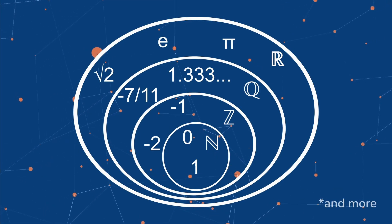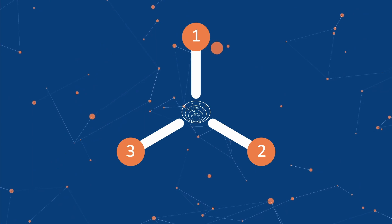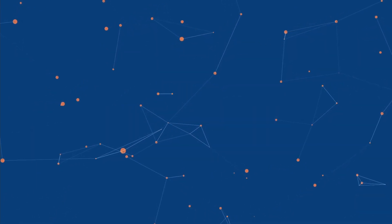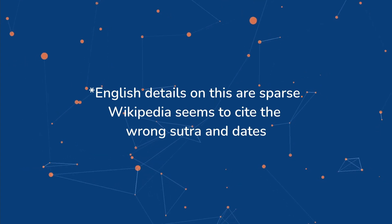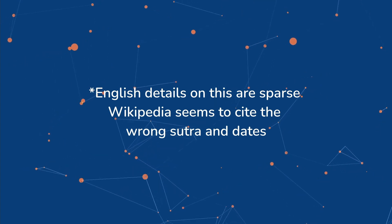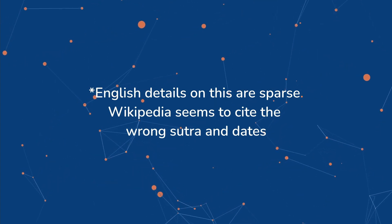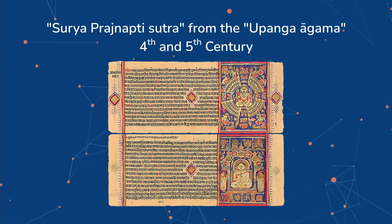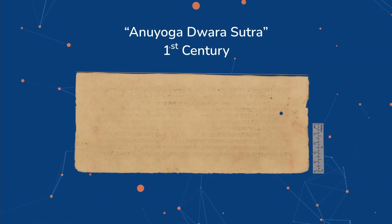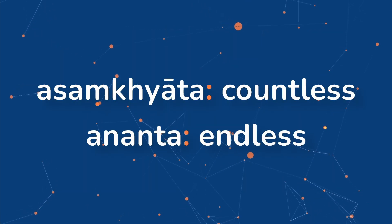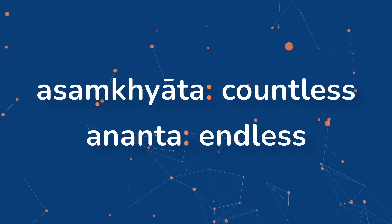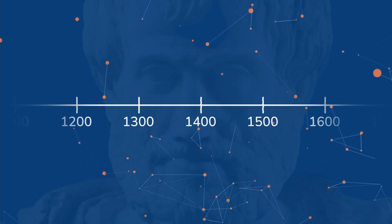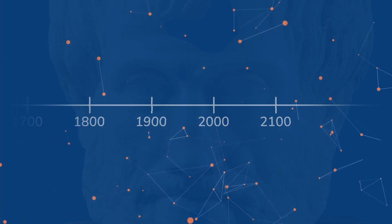Then they classified all numbers into three sets: numerable, innumerable, and infinite. The origin of this Jain mathematical system stems from two sutras — one concerned with planets, stars, and their orbits, the other concerned with infinities. This fundamental idea that there could be different types of infinities wasn't revisited for over 2,000 years, until the late 19th century by George Cantor.